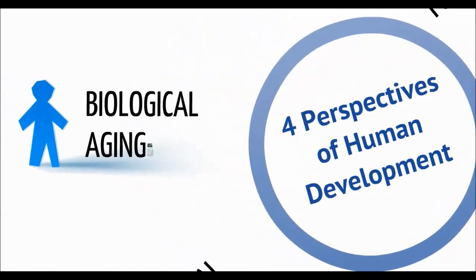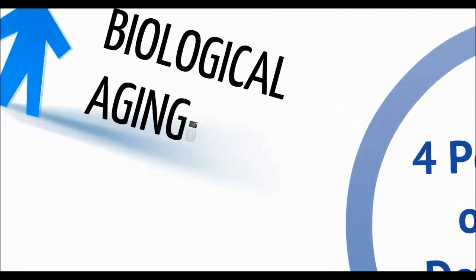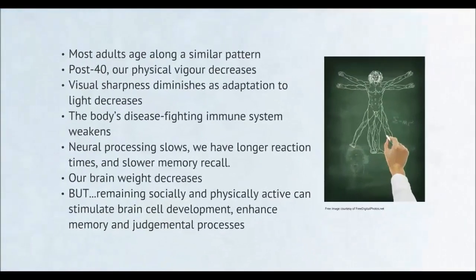From a biological perspective, most adults develop or age along a similar pattern. In middle age, post 40, our physical vigor decreases, though this can depend on individual fitness. Our visual sharpness diminishes, our body's disease-fighting immune system weakens, and our neural processing slows. We tend to have longer reaction times and slower memory recall, and our brain weight decreases so that by age 80 we have about 5% less brain mass. But remaining socially and physically active can stimulate brain cell development and enhance our memory and judgmental processes.